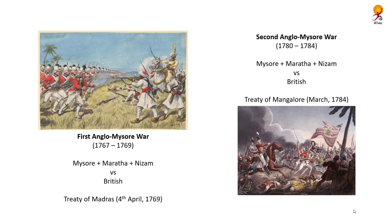The First Anglo-Mysore War lasted from 1767 to 1769. It was between Mysore and an alliance of the Nizam and Marathas with the English. Haidar Ali broke peace with both the Marathas and the Nizam, bringing them to his side, leading to a humiliating defeat of the British. This led to the signing of the Treaty of Madras on April 4, 1769.